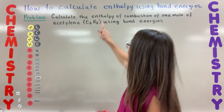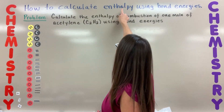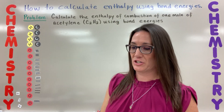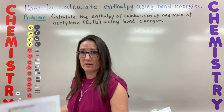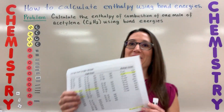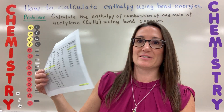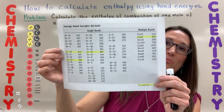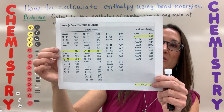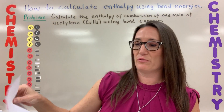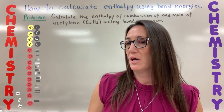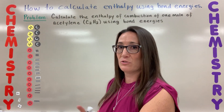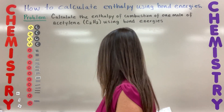In this video we're going to go through how to calculate enthalpy using bond energies. There are a few things you're going to need before you start. One is you're going to need a bond enthalpy table — sometimes called a bond dissociation table — out of your textbook or from online. Be careful, they vary, so use the one for your textbook.